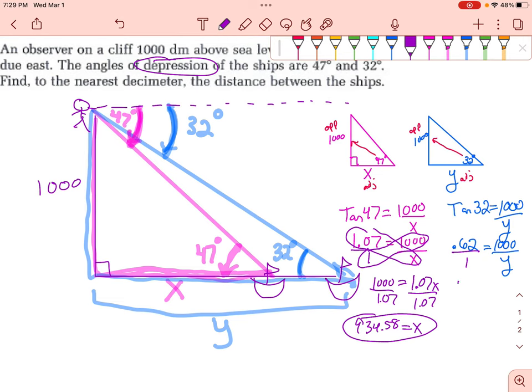And then do the same thing over here, so 1,000 is equal to 0.62Y, divide by 0.62, divide by 0.62. Y is equal to 1,000 divided by 0.62, and I'm getting 1,612.90.